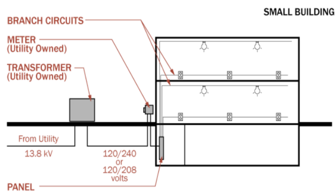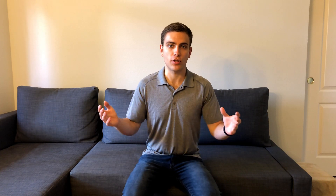Another interesting fact is that in smaller buildings — residences and smaller commercial buildings — the transformer stepping down the voltage to the amount supplied to the building is owned by the utility company and is off-site. Whereas in larger commercial buildings, this step-down is done on-site and the equipment is owned and contained within the building by the building's ownership group.